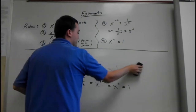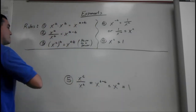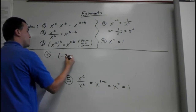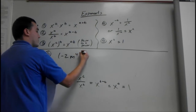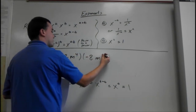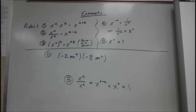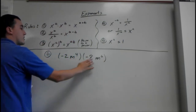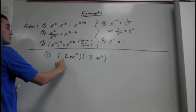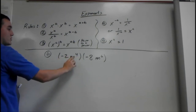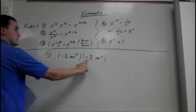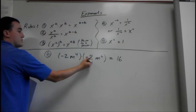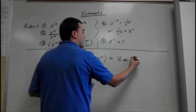Now we're going to do some harder examples. Here we have negative 2m to the fourth times negative 8m to the sixth. First you should deal with your regular numbers — the 4 exponent is only going with the m, not with the 2. So multiply the coefficients first: negative 2 times negative 8, two negatives make a positive 16. Then m to the fourth times m to the sixth — add the exponents and you get m to the tenth.